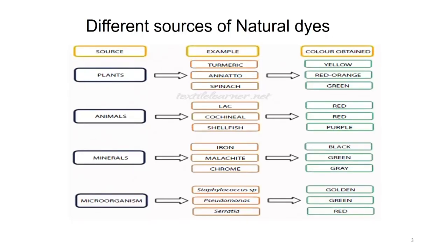Looking at different sources of natural dyes, we have an enormous number of plants that can give different dyes — for example, turmeric, annatto, spinach — giving yellow from turmeric, red-orange from annatto, and green from spinach. From animal sources we have lac, cochineal, and shellfish, giving red or red-purple from lac, red and magenta-red from cochineal, and purple or reddish-purple from shellfish. From minerals like iron, malachite, and chrome, we get black from iron — that is why ferrous sulfate as mordant causes darkening — green from malachite, and gray from chrome.